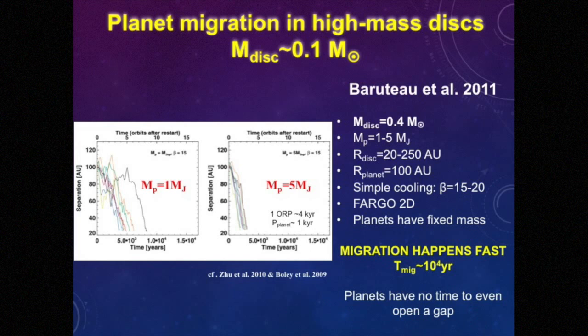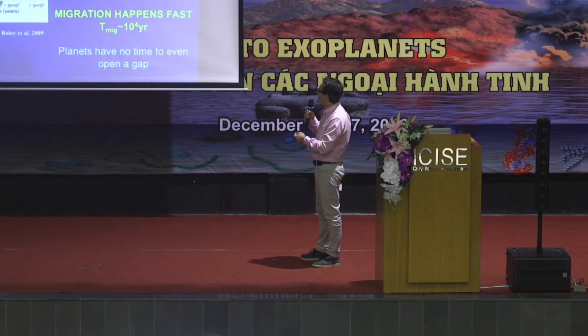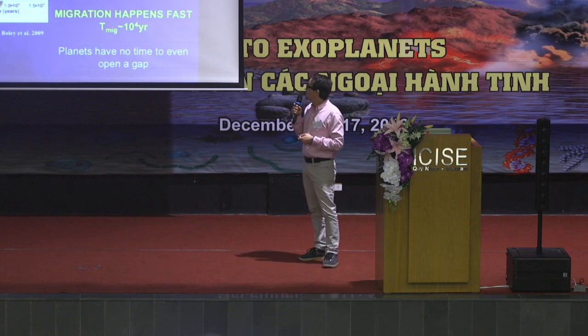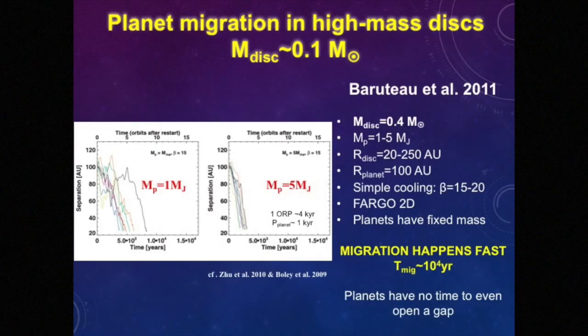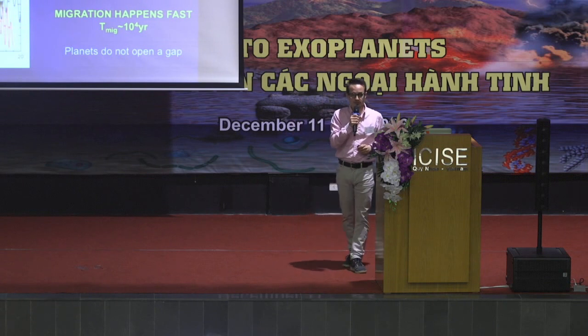This is the study by Baruteau et al. They used a relatively massive disk of 0.4 solar masses using a 2D code. But something that I miss is that the planets have fixed mass — they are not allowed to accrete mass from the disk. And again, another similar study from Michael et al. that appeared the same year found a similar thing: fast migration. What is plotted here is distance from the star versus time — it started at about 25 AU going to 16 AU. But again, these authors did not include and did not consider the increase of the mass of the protoplanet.